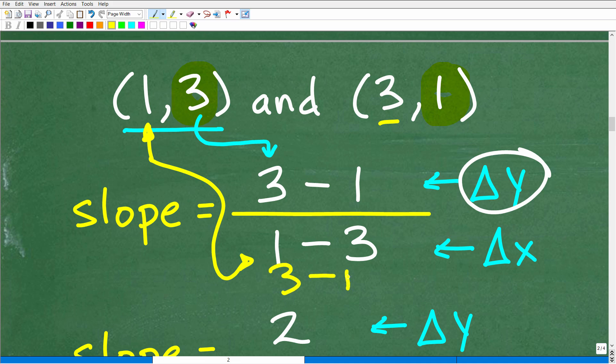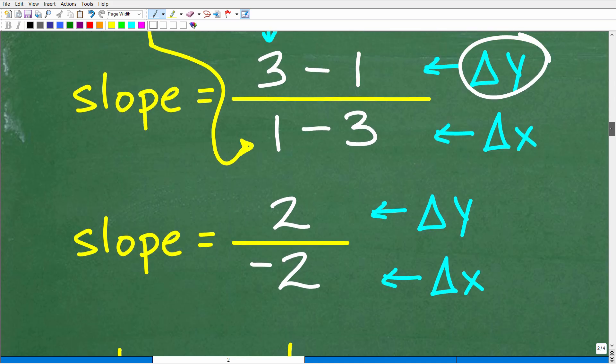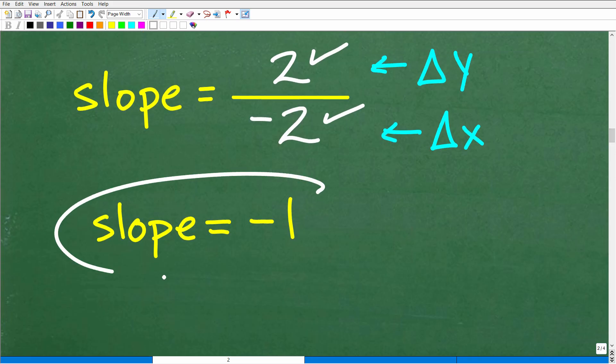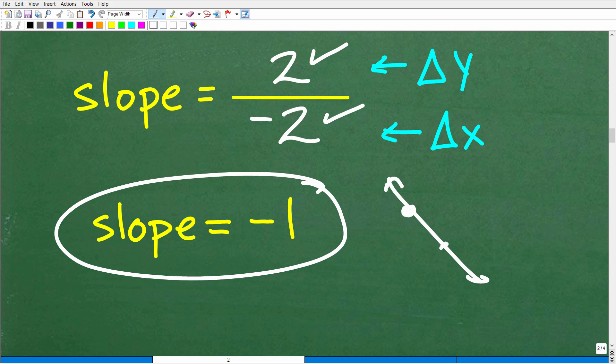If you said I'll just subtract the x's, 3 minus 1, you would have 2 over 2 or positive 1. We know that's wrong because when we look at the plot of these two points, we're expecting a negative value. So this is a huge error. A lot of students make this mistake. 3 minus 1 is 2. 1 minus 3 produces that negative 2. 2 divided by negative 2 is negative 1. And that is what we're anticipating. We've got a line going through these two points, so we're looking for a negative slope.